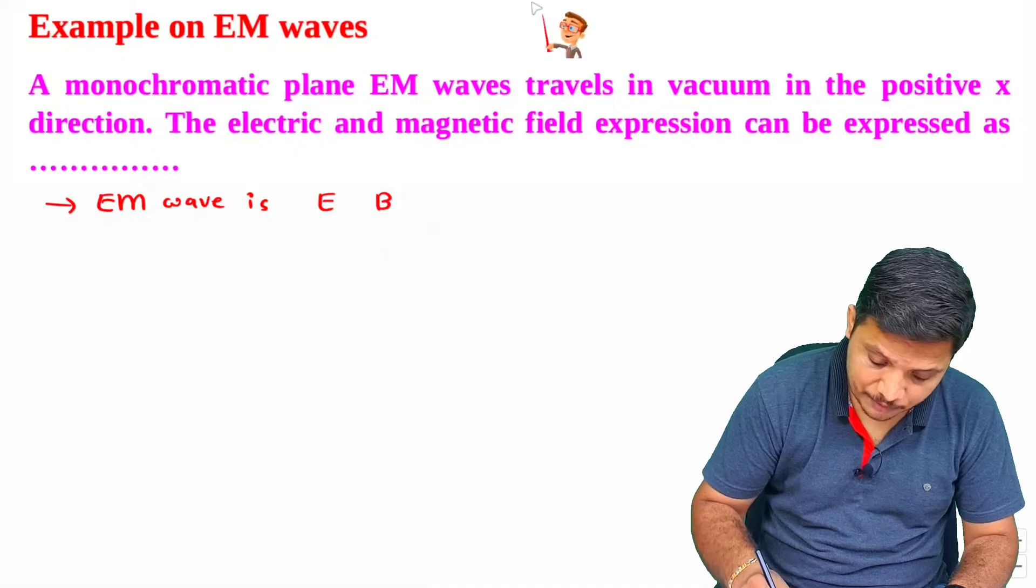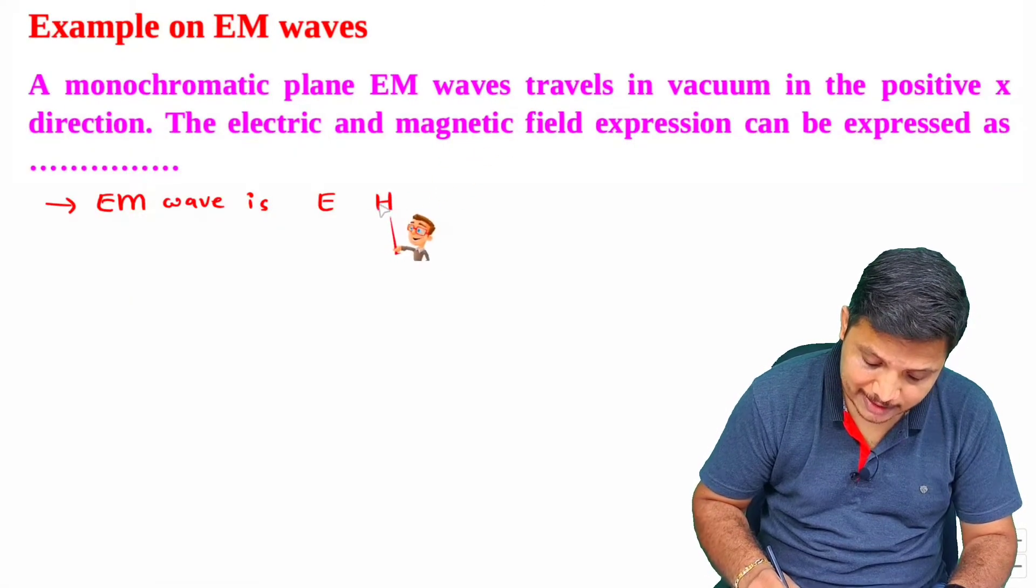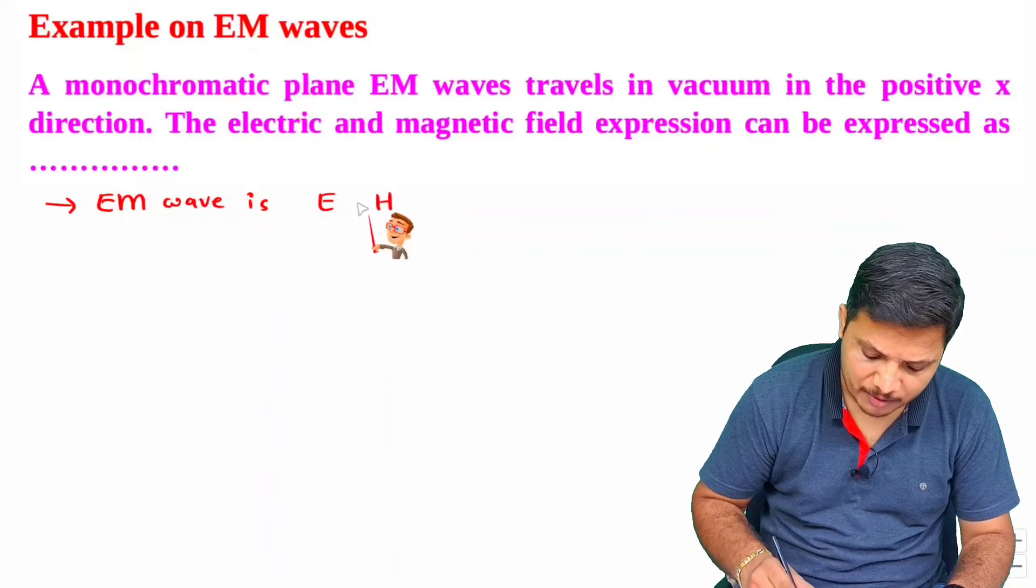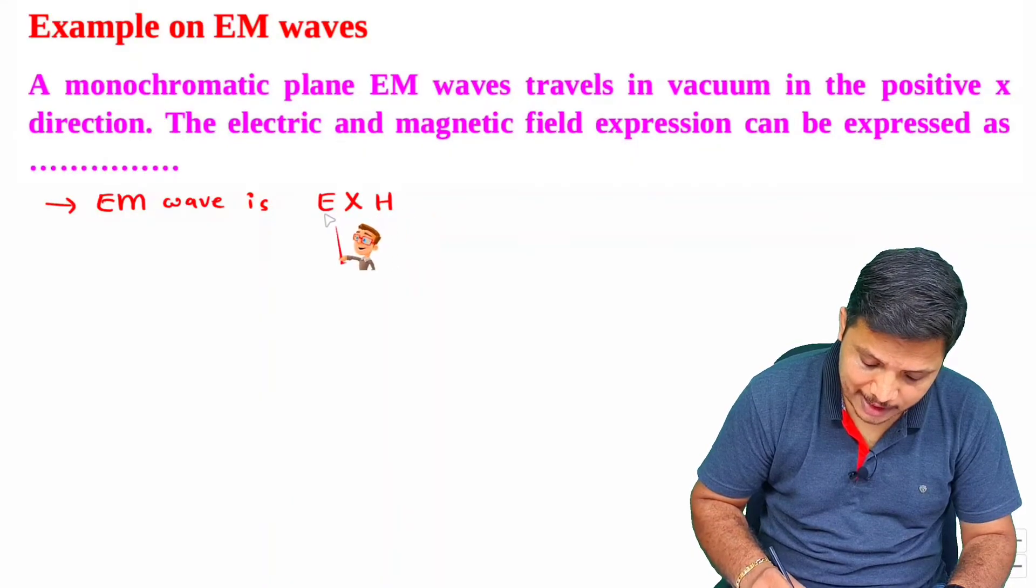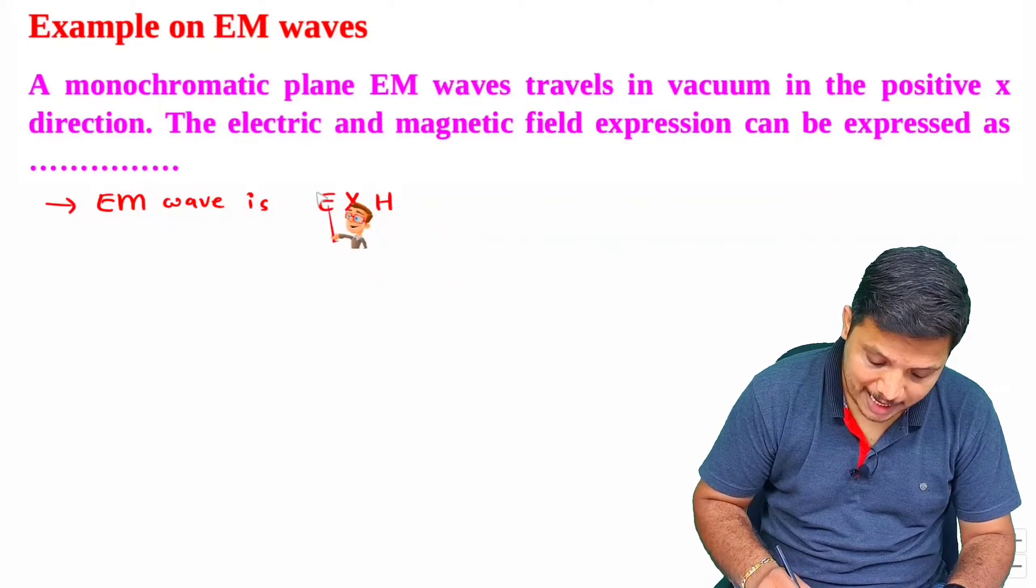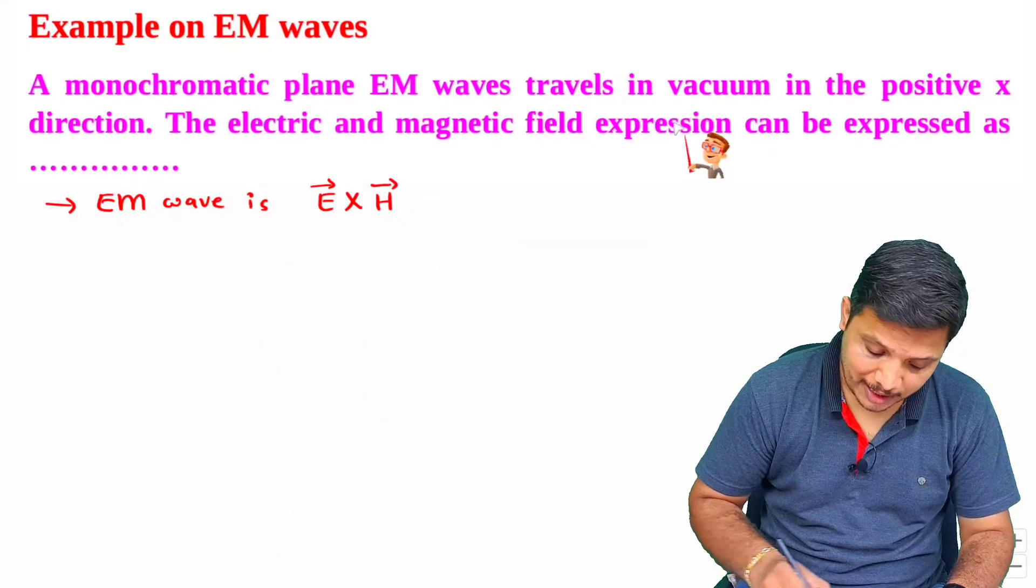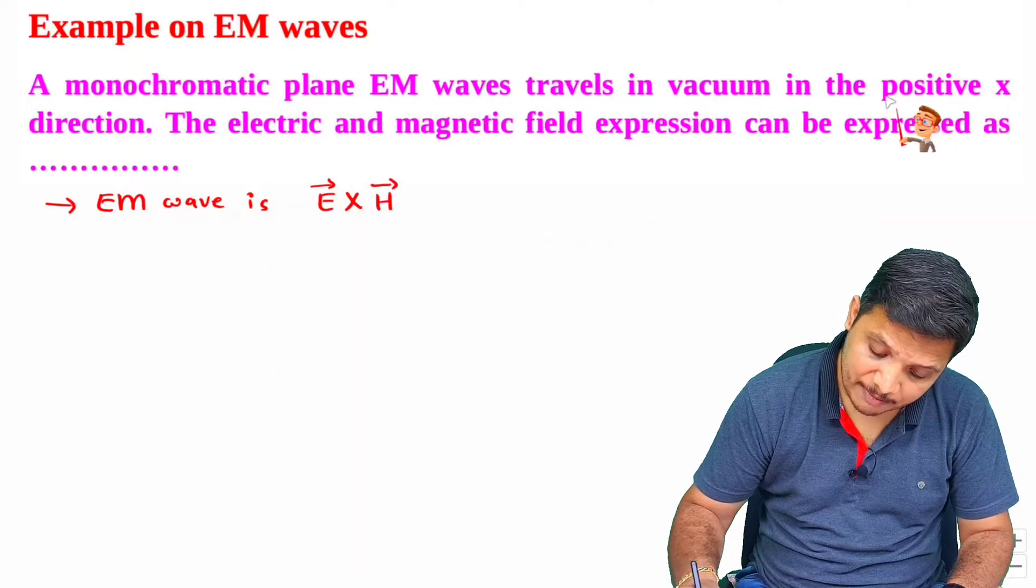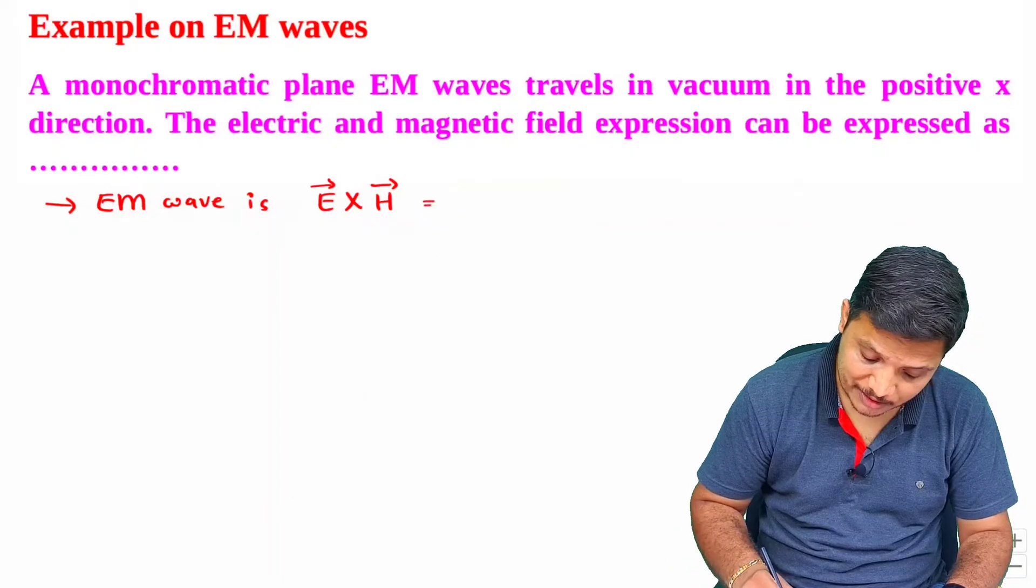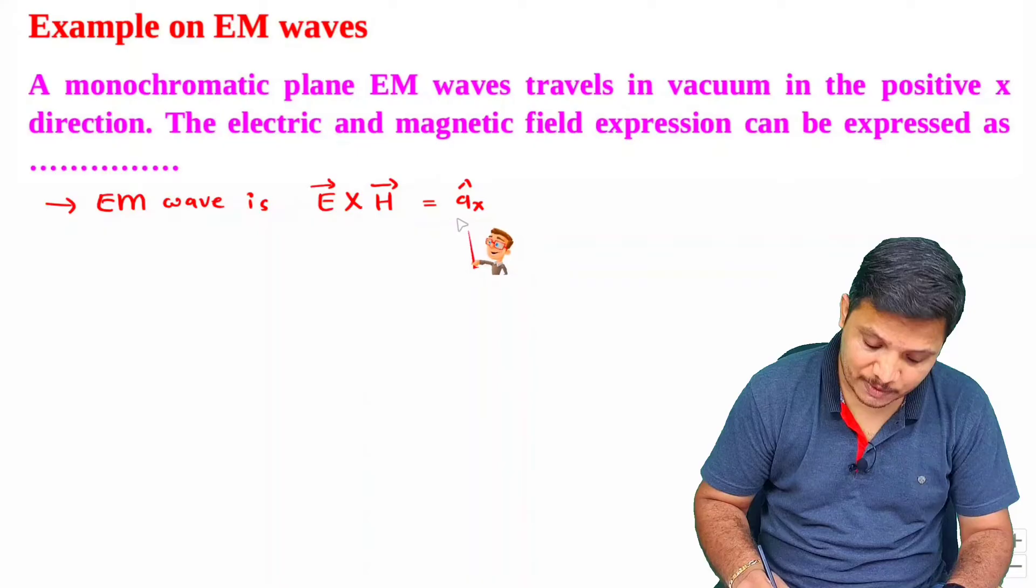And if you write that in terms of magnetic field intensity, then I need to say it is H. You can write that in B form as well. So it is E cross B or one can say E cross H. So direction of EM wave, that is E cross H. And here what is given? Direction of EM wave that is there in positive x direction. So Ax direction, that is the case which is given to us.